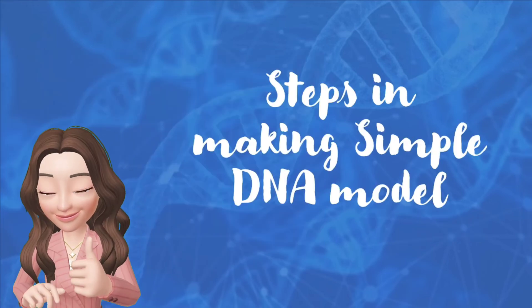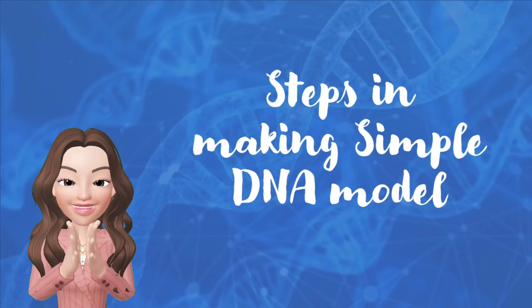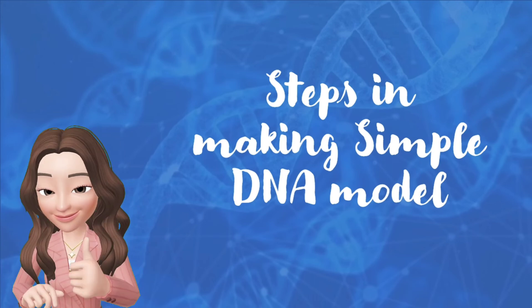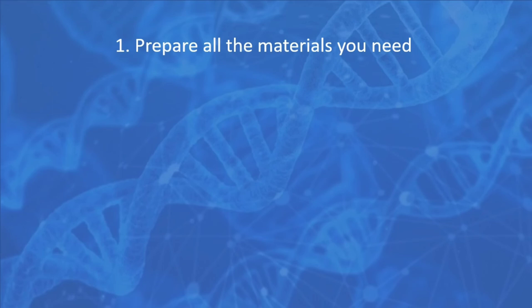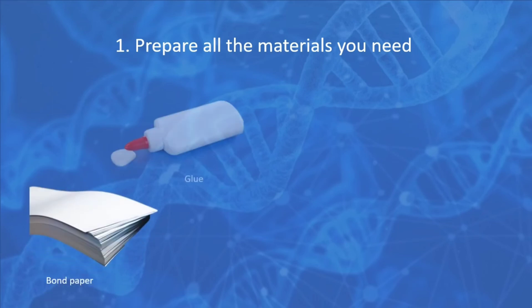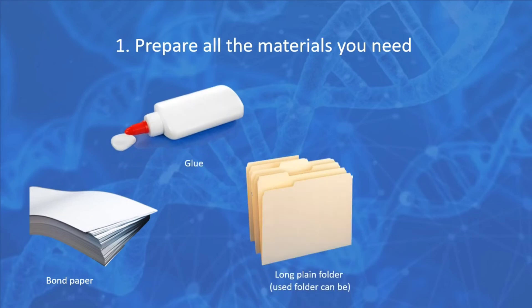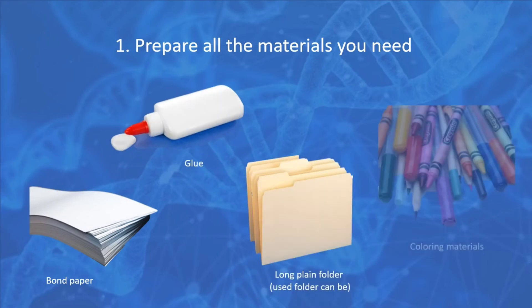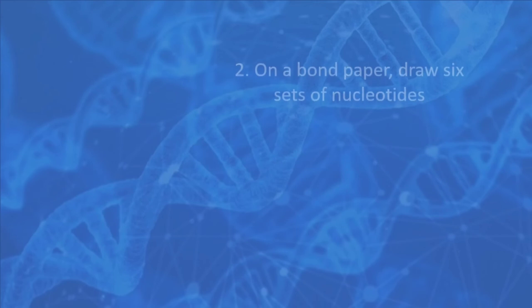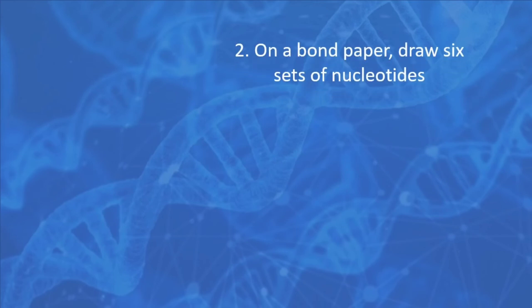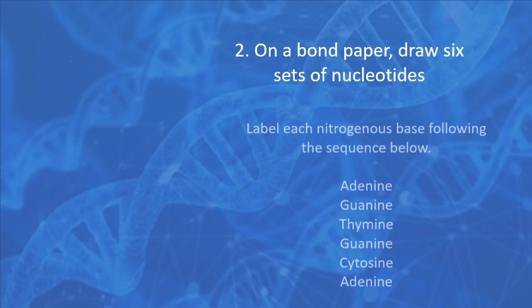Now let's talk about the steps in making a simple DNA model. First, you have to prepare all the materials you need. For the simple DNA model, we need bond paper, glue, a long plain folder, and of course the coloring materials. Then, on a bond paper, draw six sets of nucleotides.